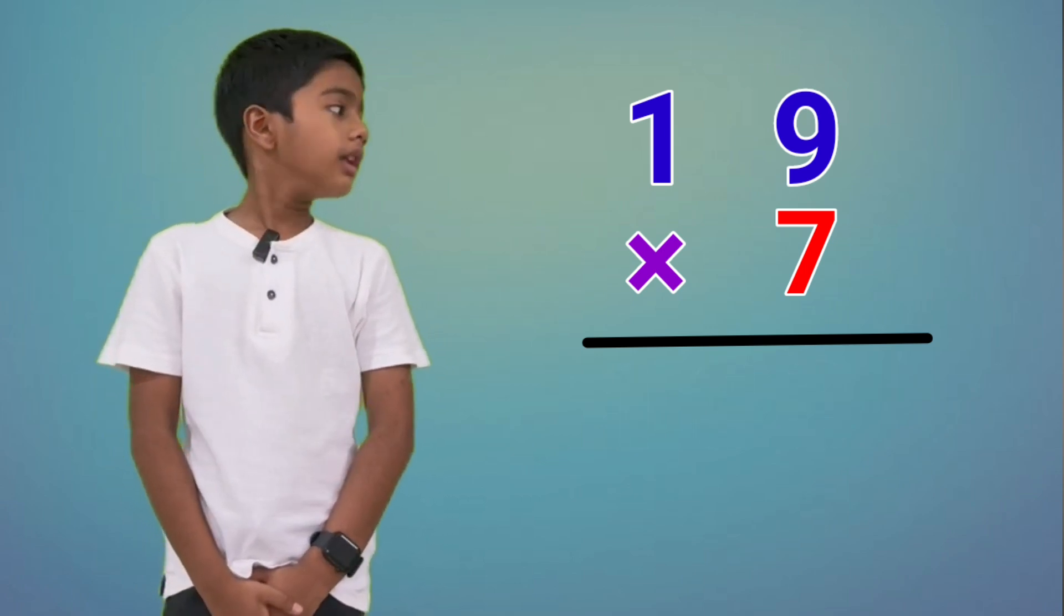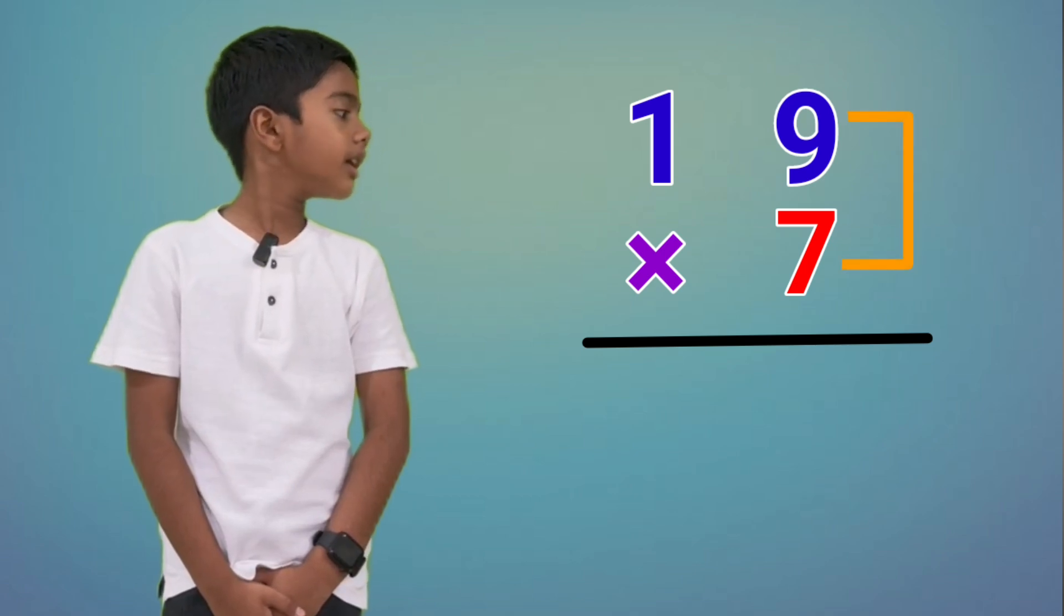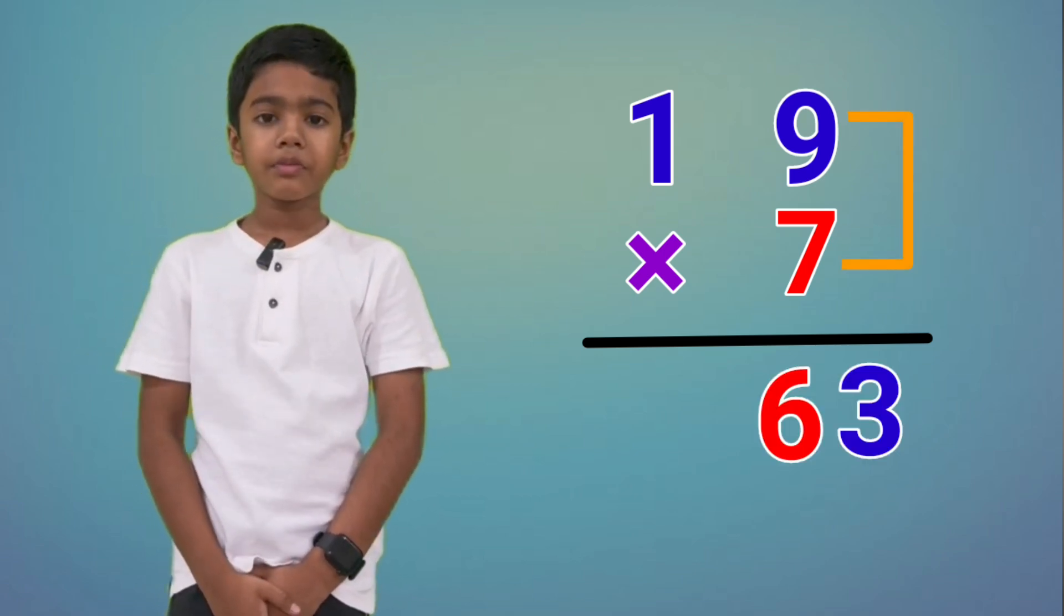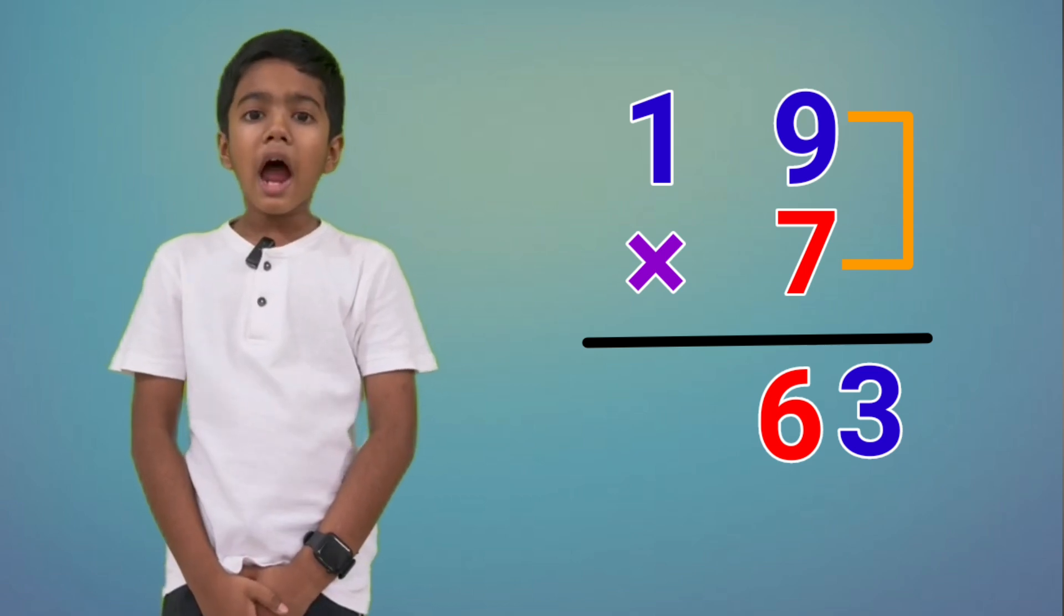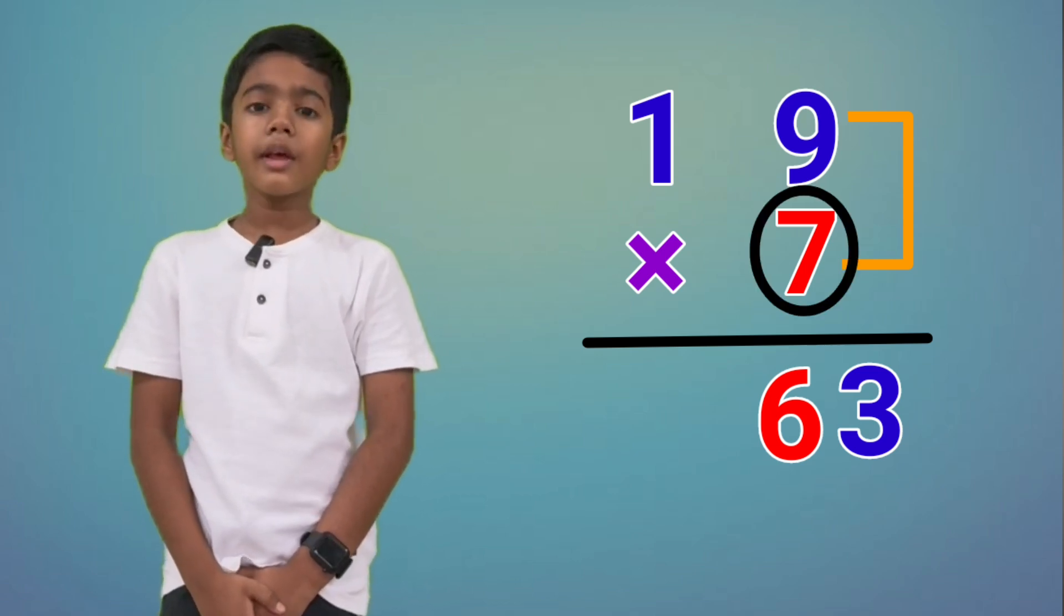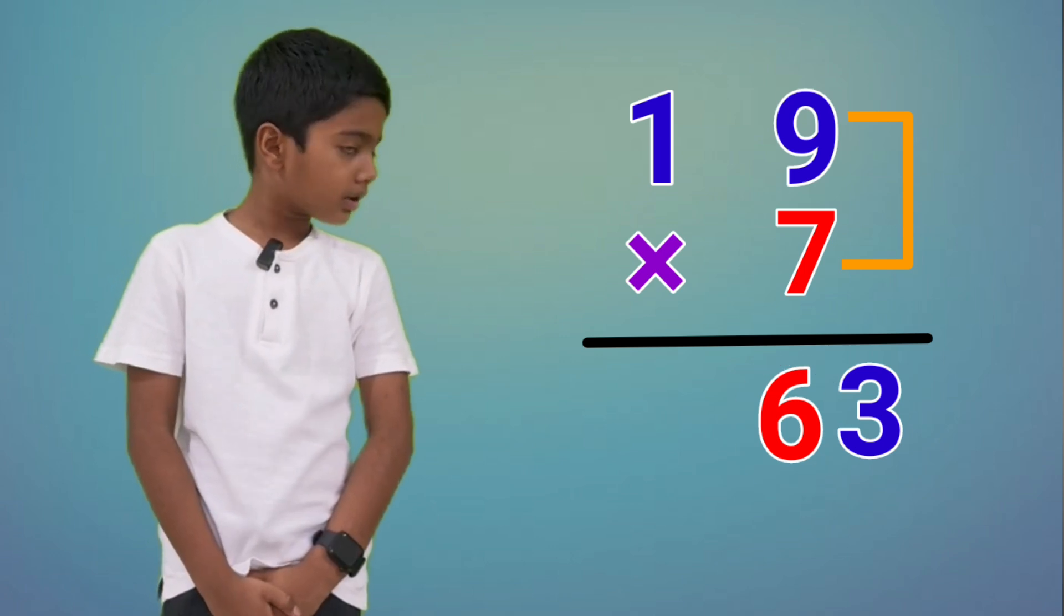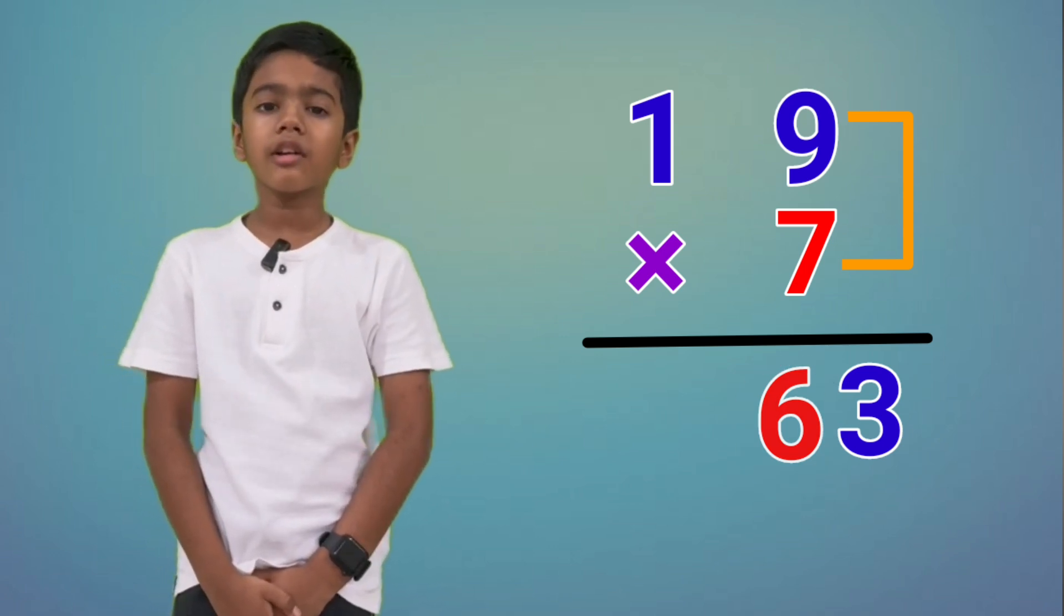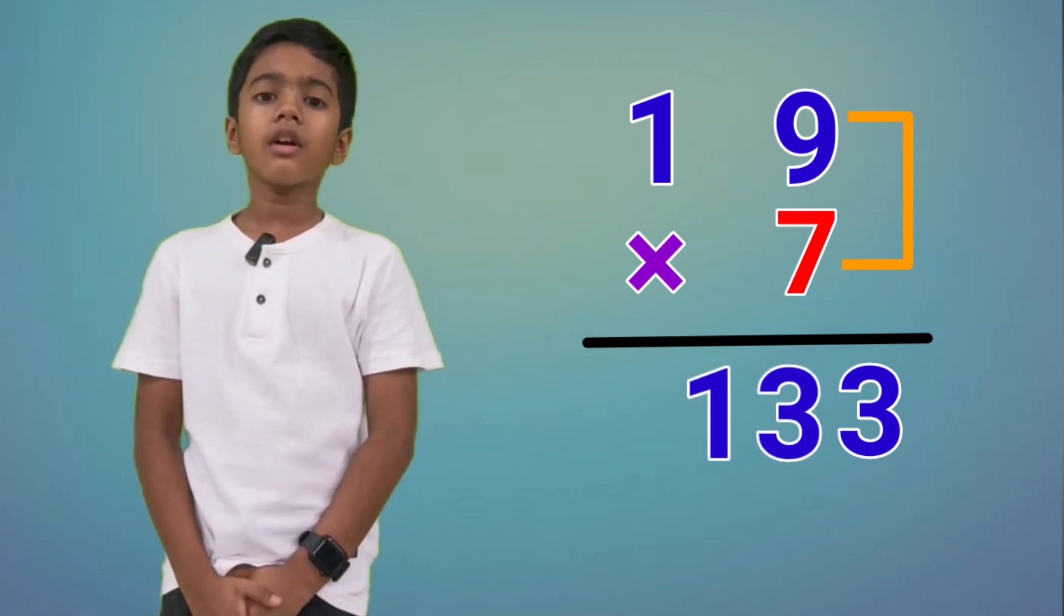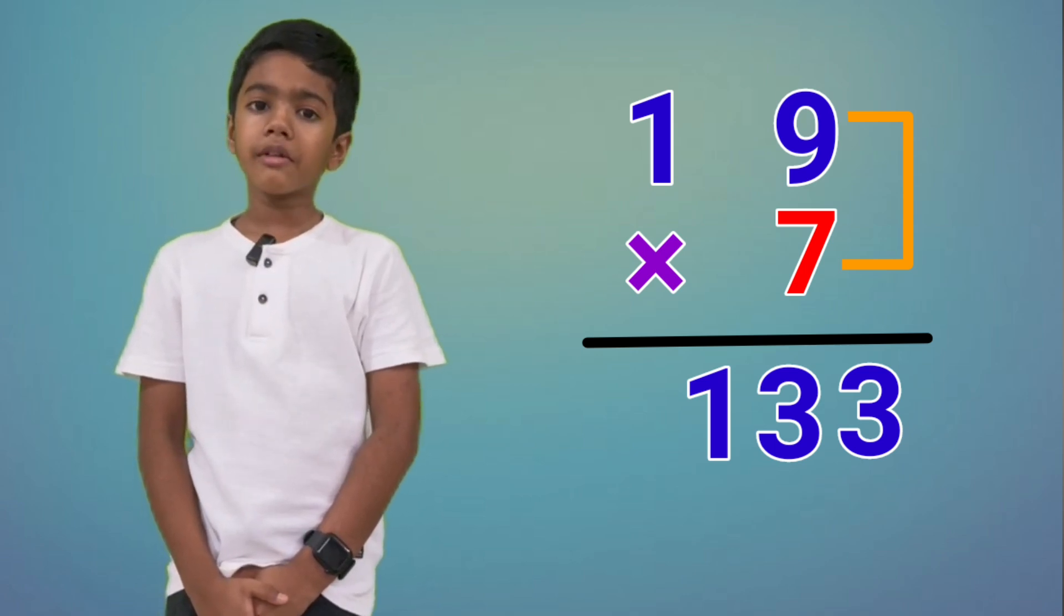Now, let's multiply 9 into 7. 9 sevens are 63. Now, add this 7 to the left side of the number. 7 plus 6, 13. 7 plus 6 and write 13. This is your answer. See, very easy.